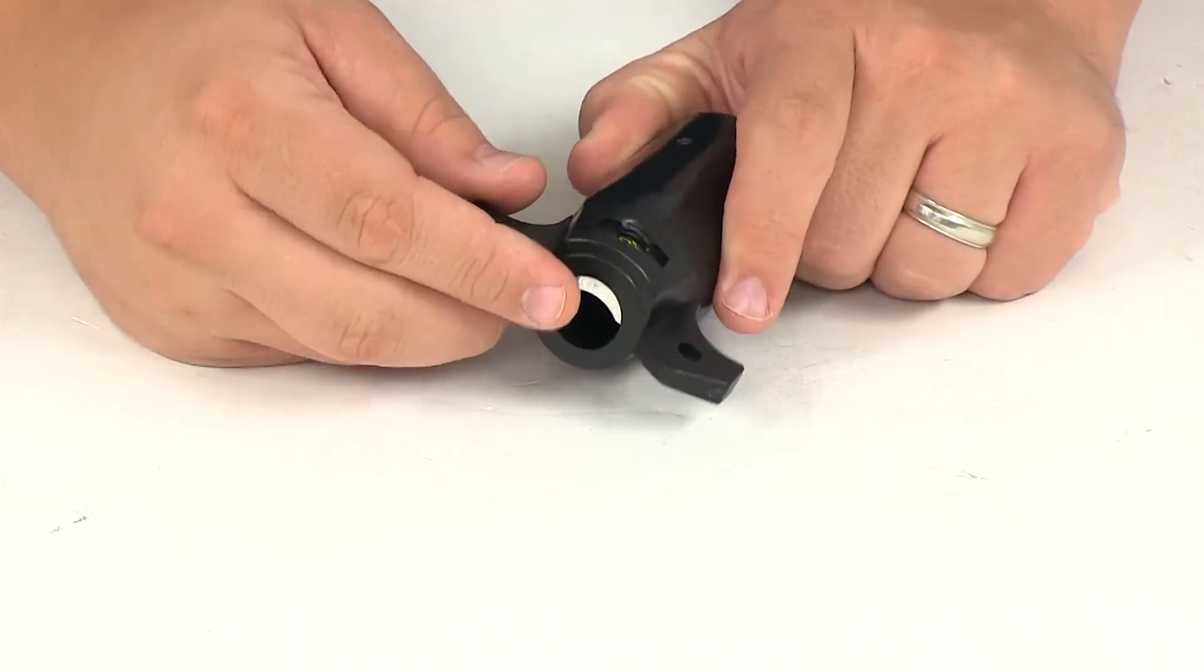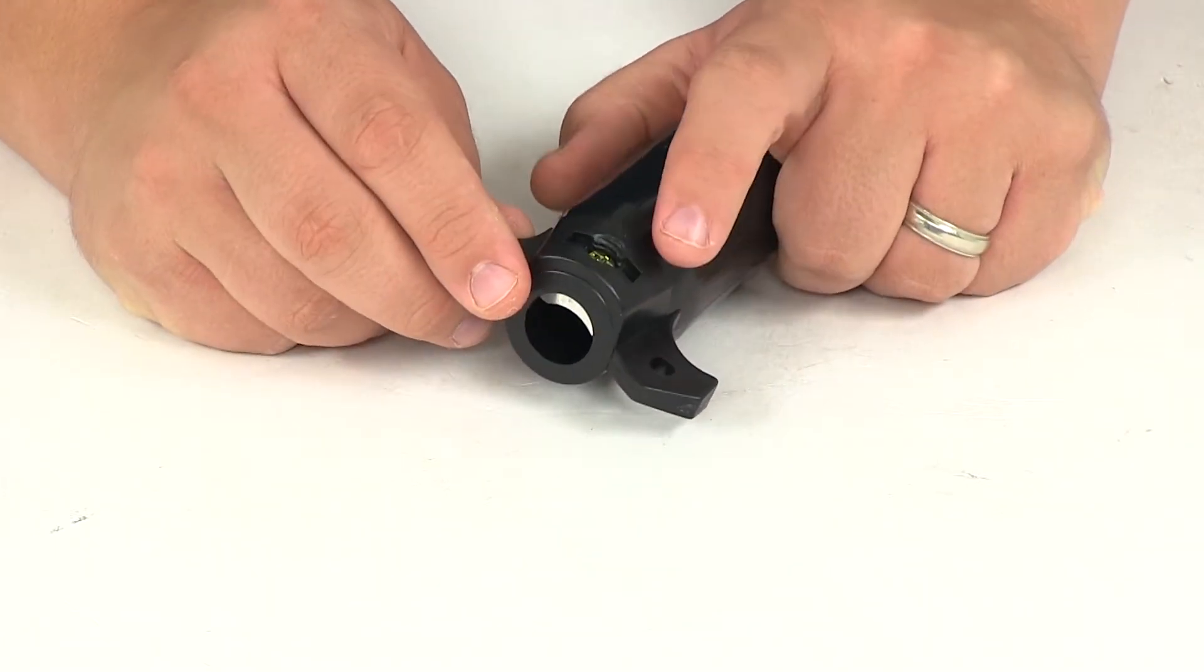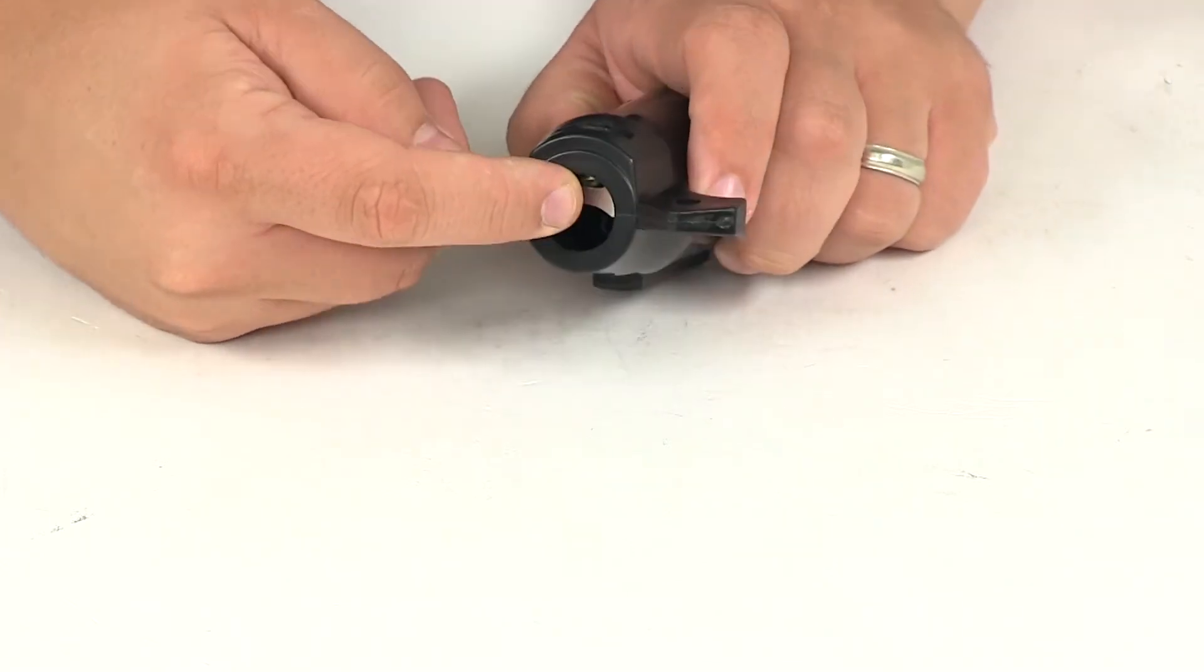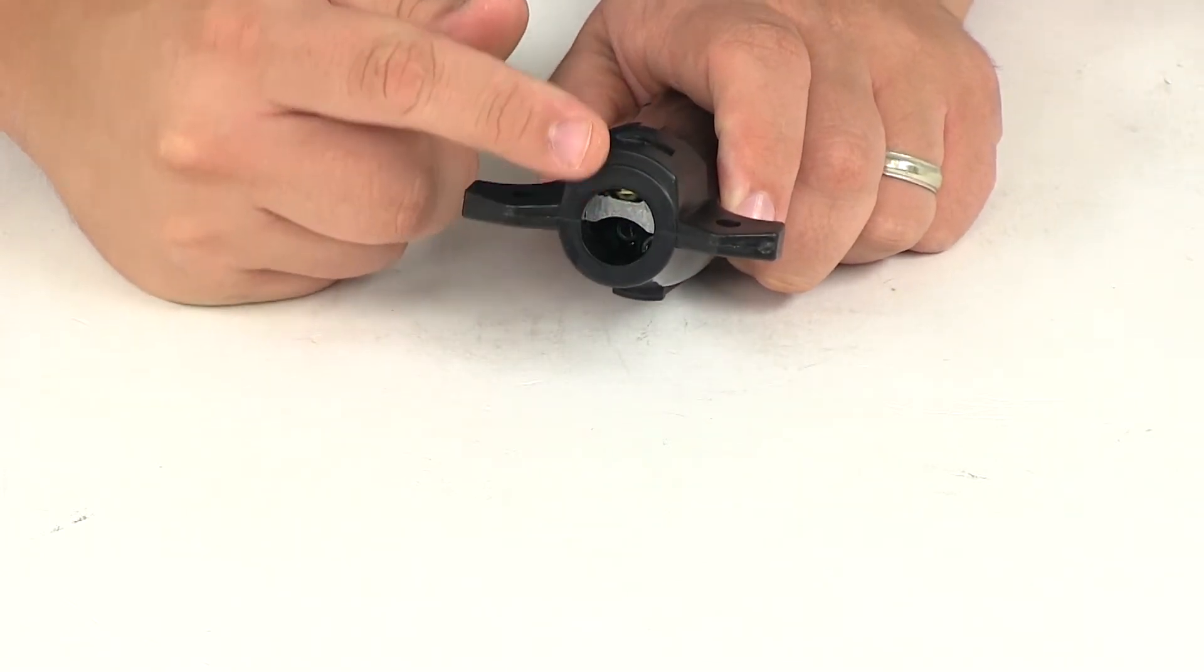It's got the retainer screw with the retaining plate here at the base. To install your wires, you undo that screw which lifts up on that metal piece in there, allowing you to feed your wires through.